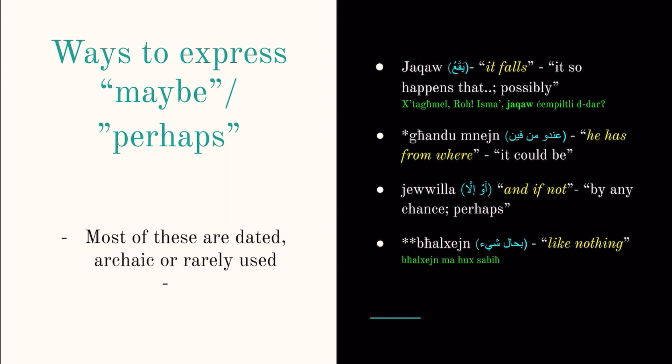I've also shared the Arabic that it comes from or that it represents, as well as an example sentence when I have one. The first one, ya'au, it literally comes from a word that means it falls, and that u is said to be from the word for and. It's something like it so happens that. In my notes I have possibly. So the example sentence I found: Shtar me Rob, Isma ya'au chempilt ni dadar. Either what's up Rob or what are you doing Rob? Listen, perhaps he called me at the house. It's from a book, so it kind of looks to me to be a literary word. I have also seen this in the Maltese Bible as well. I have never seen this used by any Maltese person in contemporary texts or in Facebook groups.